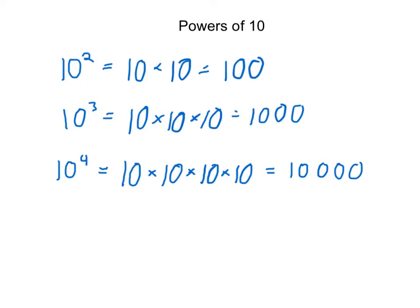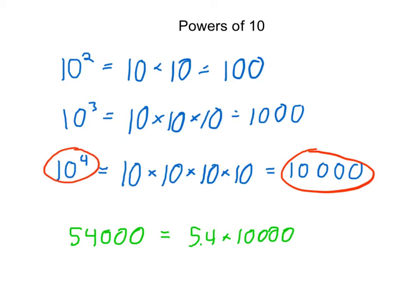We can use a power of 10 to write a big number more efficiently. For example, 54,000 is the same as 5.4 times 10,000. And because 10,000 can be written as 10 to the fourth, we can write 54,000 as 5.4 times 10 to the fourth.